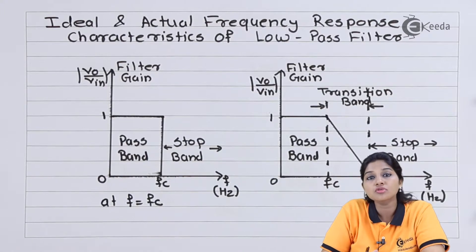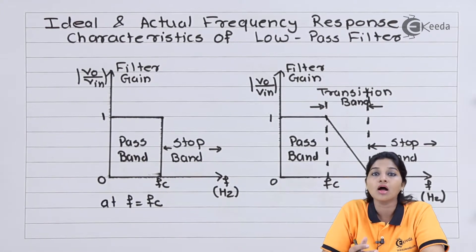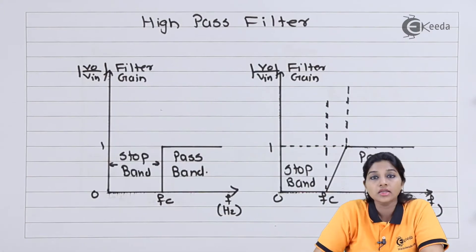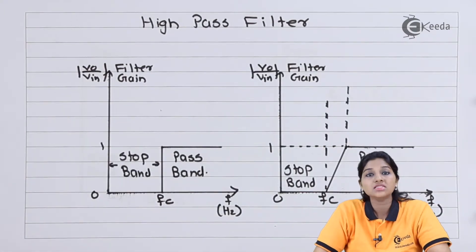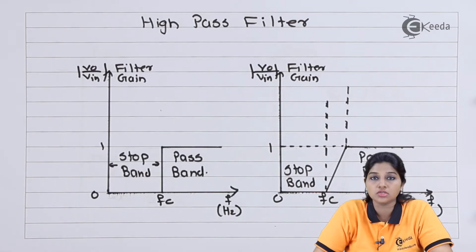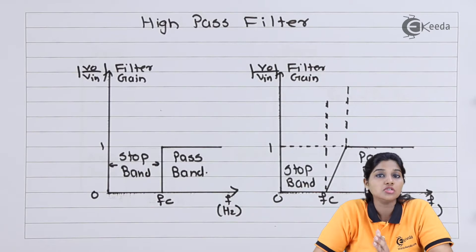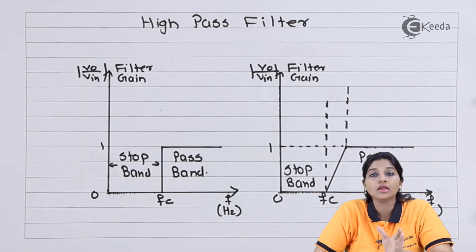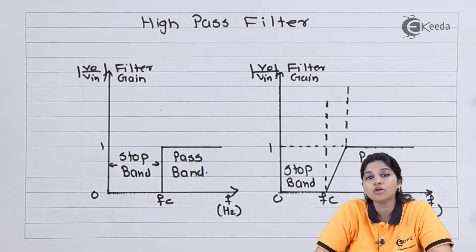Moving towards the next type of filter, that is the high pass filter. As its name indicates, the high pass filter passes only the higher band of frequency and blocks the lower band of frequency. The frequencies which are below the cutoff frequency fc are stopped by the filter, and the frequencies which are above the cutoff frequency are passed by the filter.